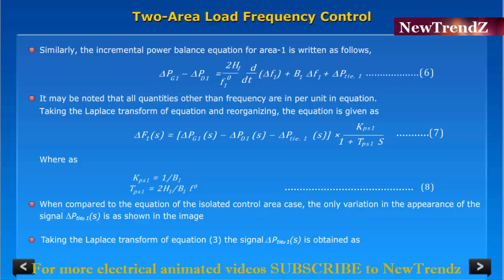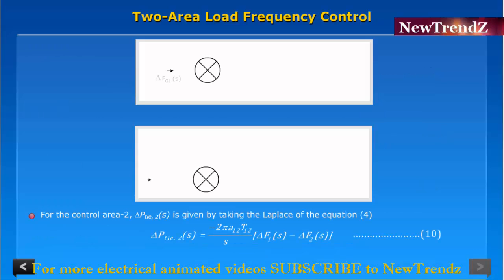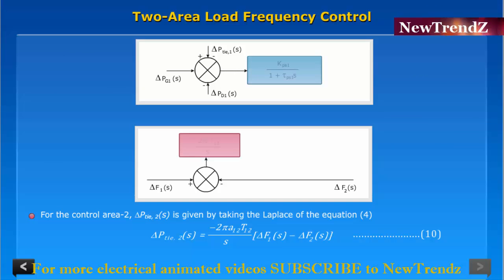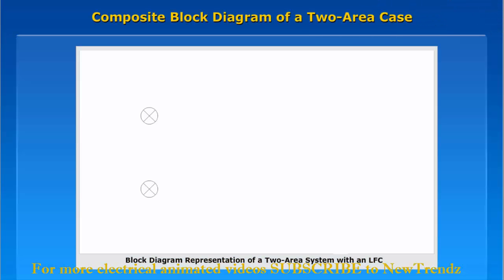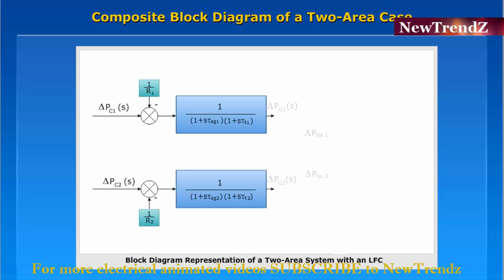Taking the Laplace transform of equation 3, the signal Delta P tie one of s is obtained. For control area two, Delta P tie two of s is given by taking the Laplace transform of equation 4. The composite block diagram representation of the two-area system with an ellipse is then shown.